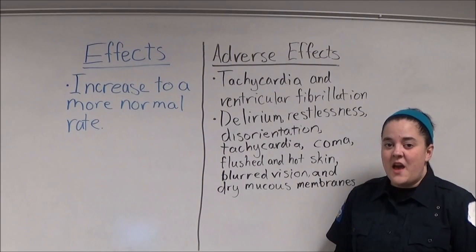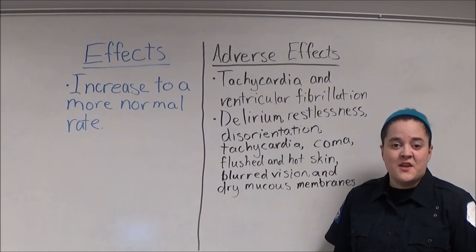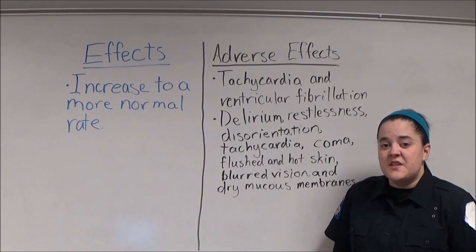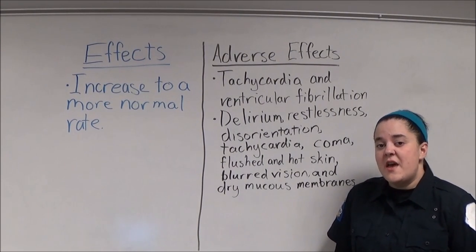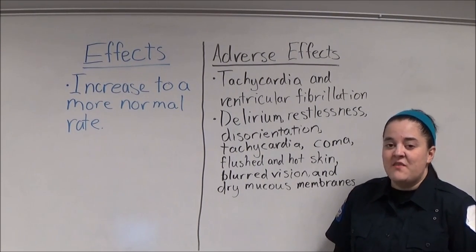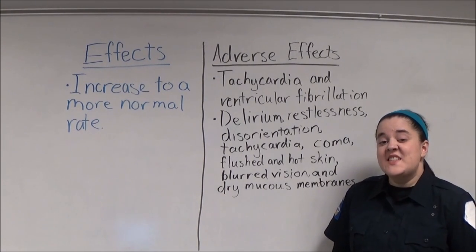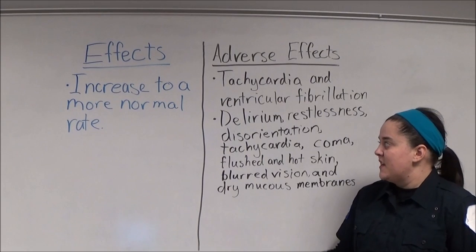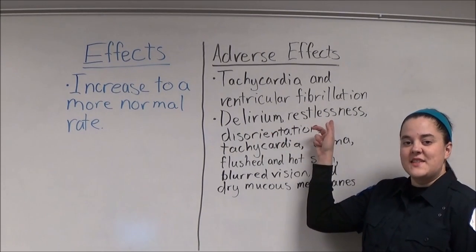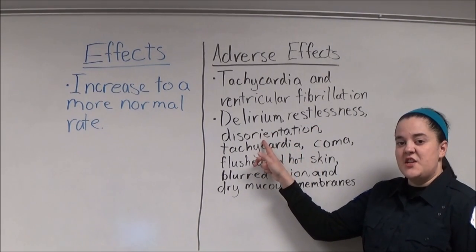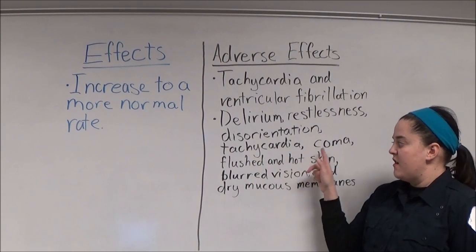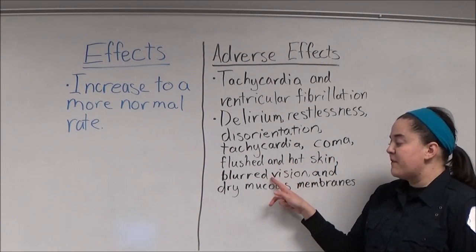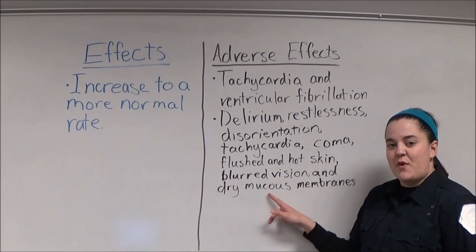The intended effect of atropine is to increase cardiac conduction to a more normal rate. Adverse effects include tachycardia and ventricular fibrillation when given intravenously. When given in excessive doses, patients may experience delirium, restlessness, disorientation, tachycardia, coma, flushed and hot skin, blurred vision, and dry mucous membranes.